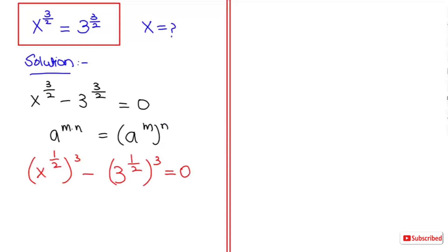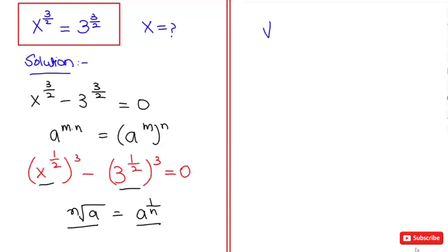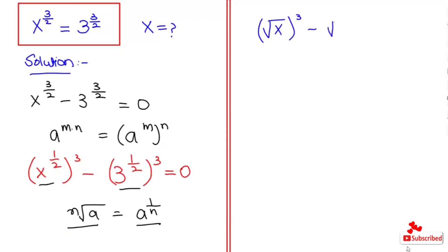Now if you can see here, we can apply the radical property that is a to the power of 1 over n. So this is in this form. I will write root x whole to the power of 3 minus root 3 whole to the power of 3 is equal to 0.